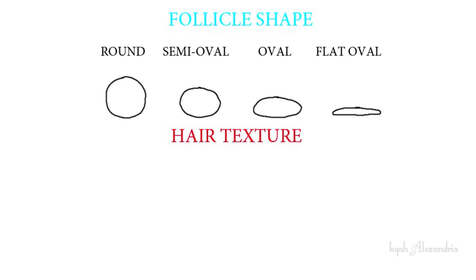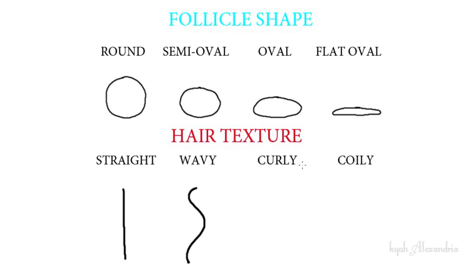For example, straight hair will have a perfectly round shaped follicle, while wavy hair has a semi-oval shape. Curly hair has an oval shape, and coily or kinky hair has a flat oval shaped follicle. So the flatter the follicle, the curlier the hair — a perfectly flat follicle produces a coily hair texture.